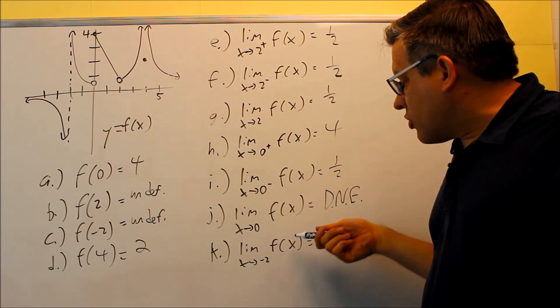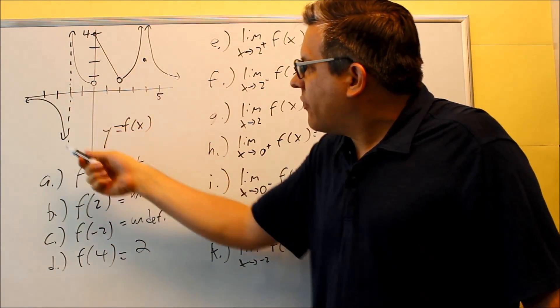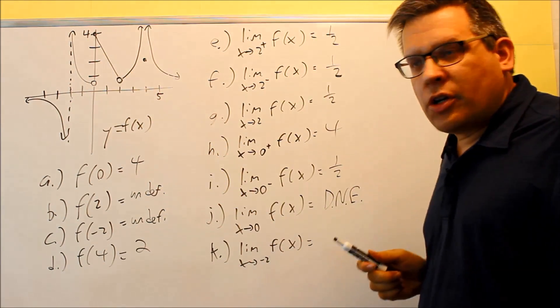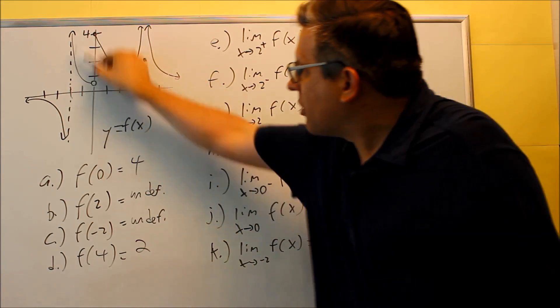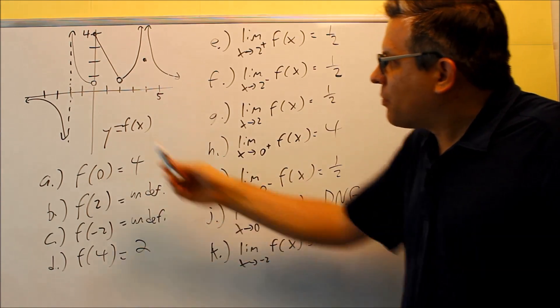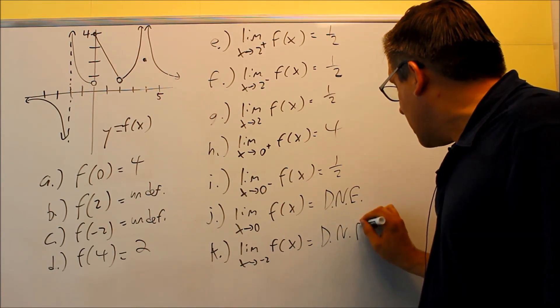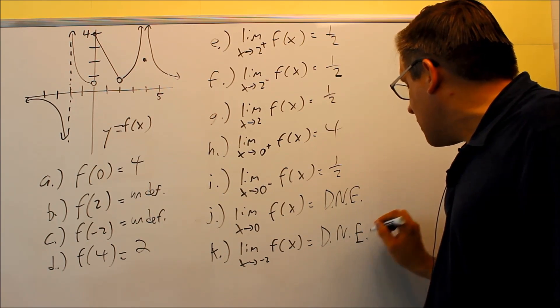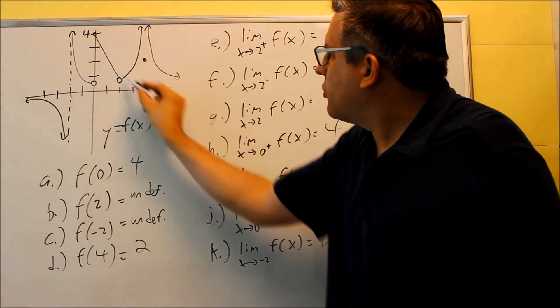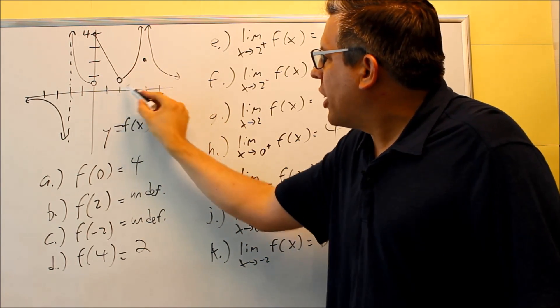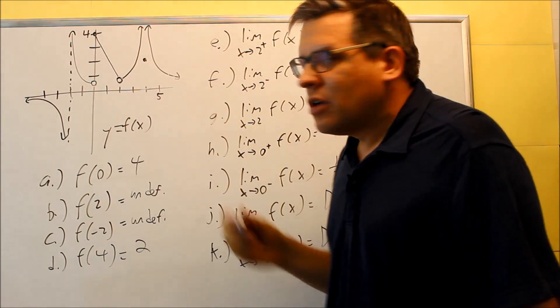The limit as you approach negative two - we have to look at it from the left and from the right. This is another one we notice that as we approach it from the left that goes down to negative infinity, this one goes up to positive infinity. That's going to two different things, so again this is DNE. Does not exist because they approach two different things. In order for a limit to exist they both have to approach the same number like it does at two. Otherwise if it goes to two different things it does not exist.